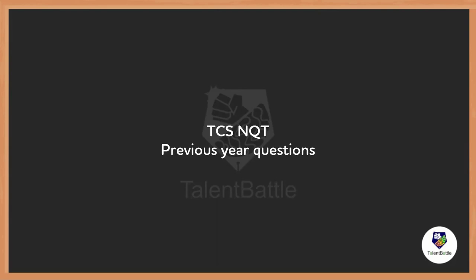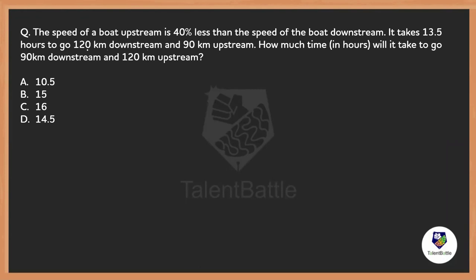Let's start the very first question. This question is from Boats and Streams. Given the speed of upstream is 40 percent less than the speed of downstream. Speed of upstream being 40 percent less means it would be 60 percent of the speed of downstream. So the ratio of speed of upstream to speed of downstream is 60 by 100, which simplifies to 3 by 5.